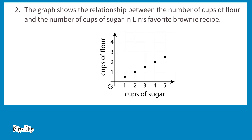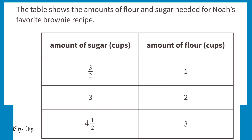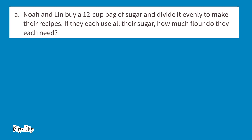Problem 2, from 8th grade Unit 3 Lesson 4: The graph shows the relationship between cups of flour and cups of sugar in Lynn's favorite brownie recipe. The table shows the amounts for Noah's recipe. Part A: Noah and Lynn buy a 12-cup bag of sugar and divide it evenly. If they each use all their sugar, how much flour does each need?